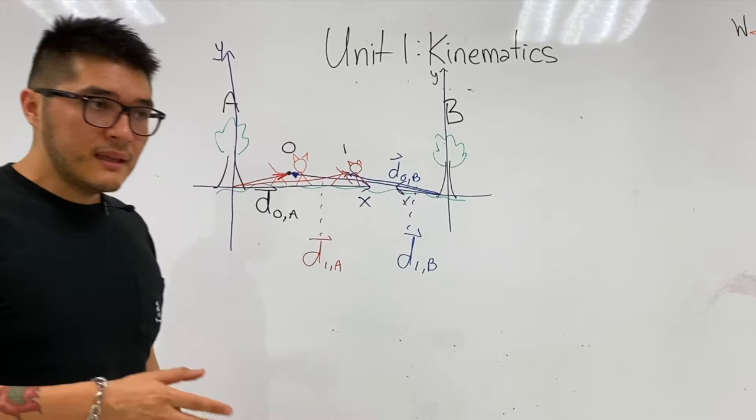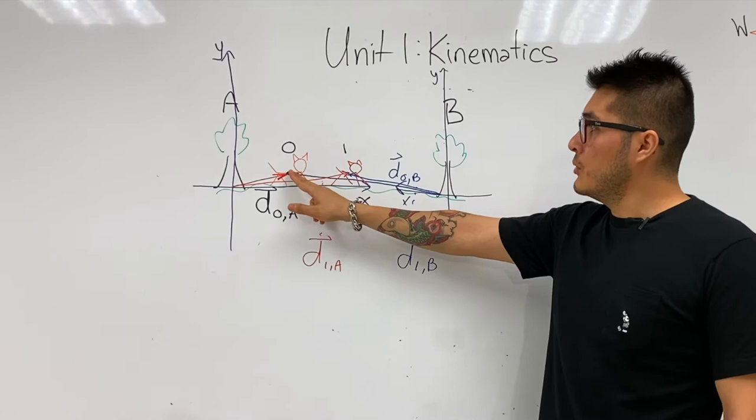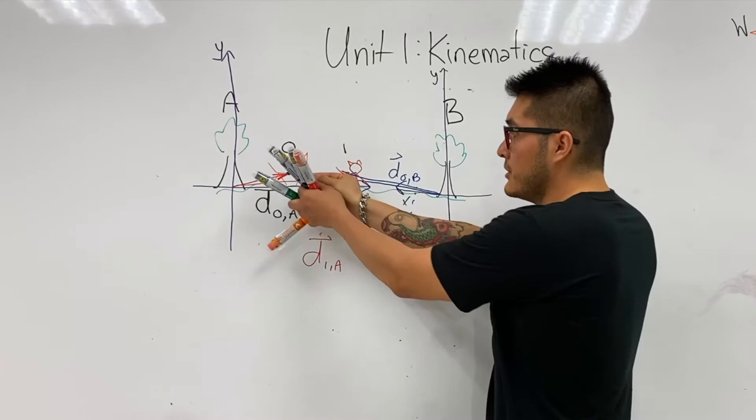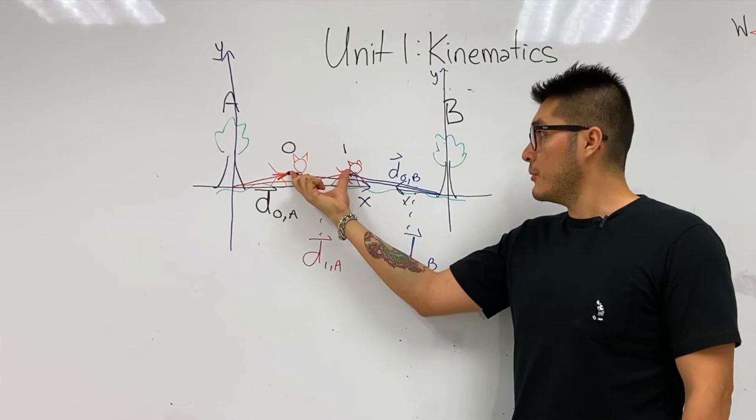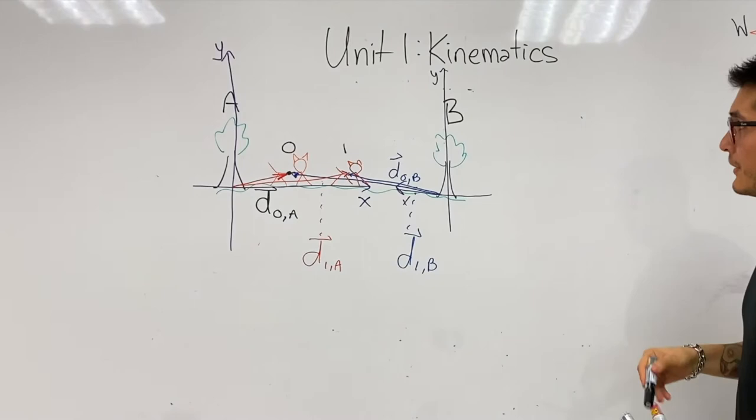In order for them to both agree, they need to come up with a new quantity. They can both agree that the cheetah has moved some distance to the right, and we can actually measure the distance. So that's what we're going to find today. We're going to call that quantity our displacement vector.